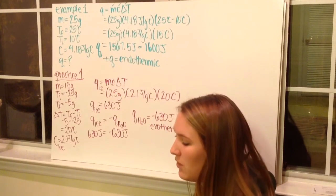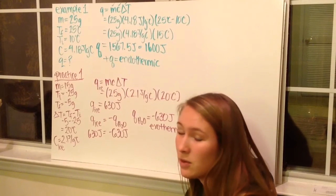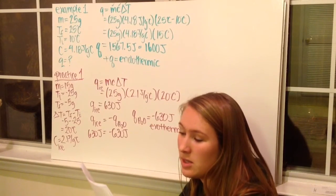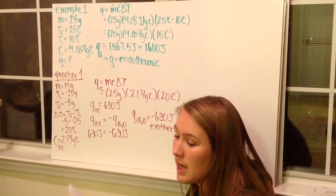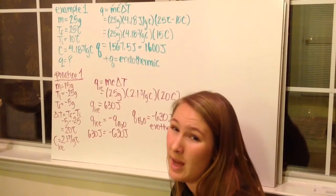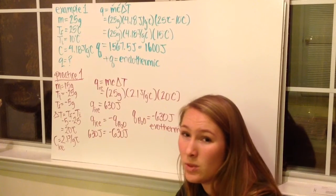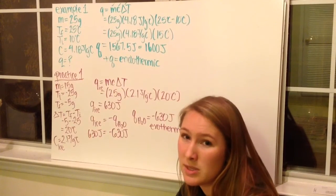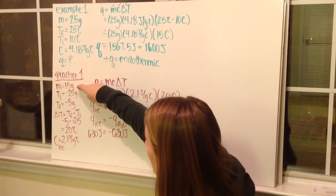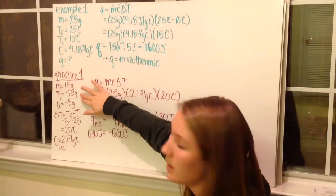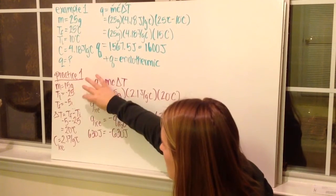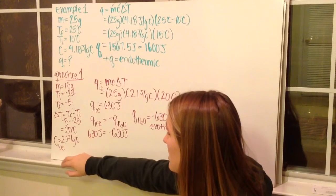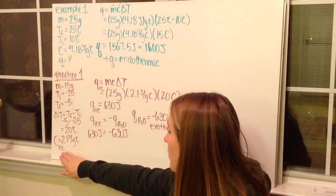Practice problem one: if 15 grams of ice is heated from negative 25 degrees Celsius to negative 5 degrees Celsius, what is the heat change of the water in joules? The specific heat of ice is 2.1 joules per gram degrees Celsius. Here we're looking at the heat change of the water but given information about ice. The Q for our system is equal and opposite to the Q for our surroundings. Variables: mass 15 grams, initial temperature negative 25 degrees Celsius, final temperature negative 5 degrees Celsius, delta T = negative 5 minus negative 25 = positive 20 degrees Celsius, and specific heat of ice is 2.1 joules per gram degrees Celsius.